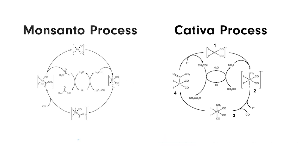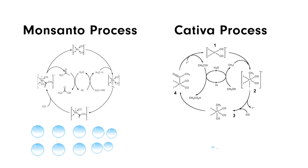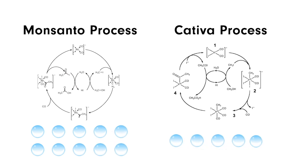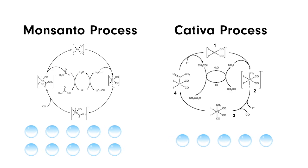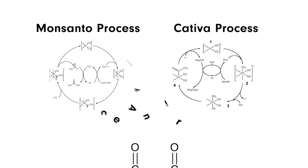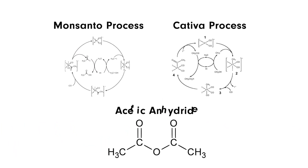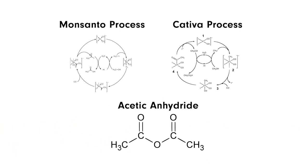Catalytic amounts of water are used in both processes, but the Cativa process requires less, so the water-gas shift reaction is suppressed and fewer byproducts are formed. By altering the process conditions, acetic anhydride may also be produced in the same plant using rhodium catalyst.